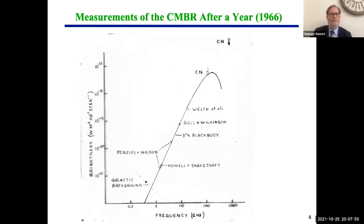One year after the discovery, less than 12 months, this handmade plot was made—drawn with a ruler and pen—showing brightness versus frequency. You can see two points from Penzias and Wilson, plus Howell and Shakespeare who measured nearby and the galactic background, the Roll-Wilkinson and Jack Welch points, and CN and CH measurements. So by 1966, we knew this was something well described by a 3 Kelvin blackbody in the Rayleigh-Jeans region. The question was whether it turned over or not, and that took longer to establish.